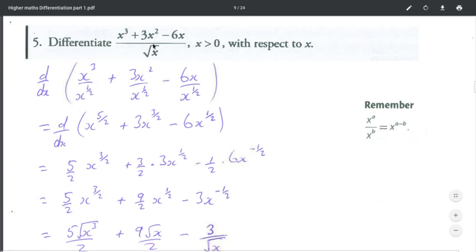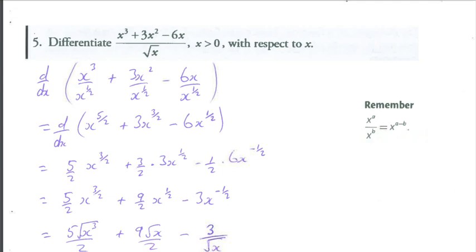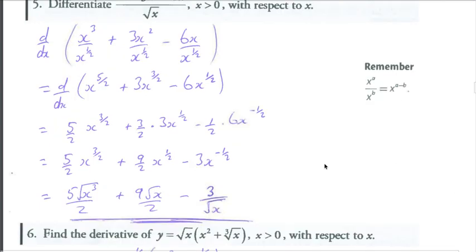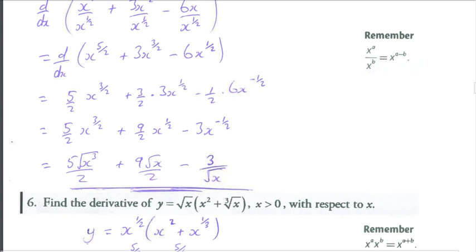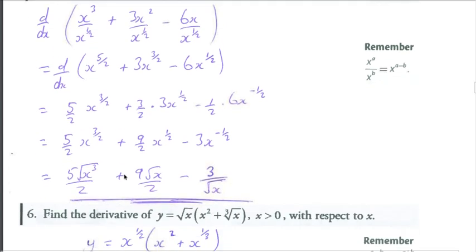And it's also very good practice to constantly use these skills, it does make us remember them. So top number is the power, bottom number is the root. Remember guys this is x cubed all square rooted, so it'll be 5 multiplied by the square root of x cubed all divided by 2.